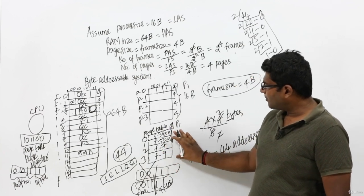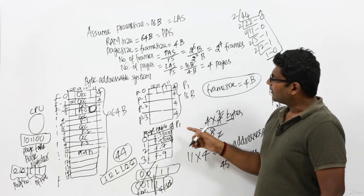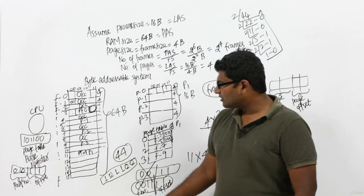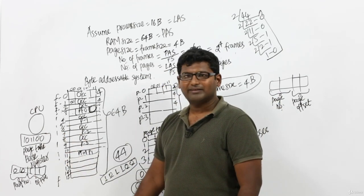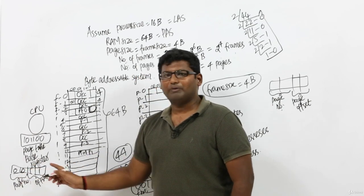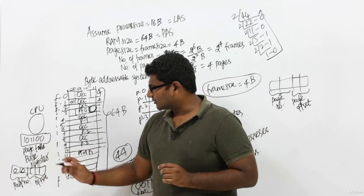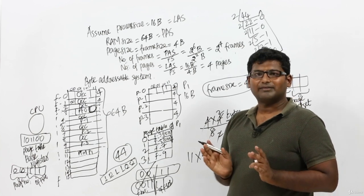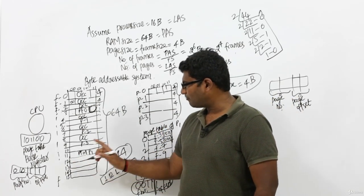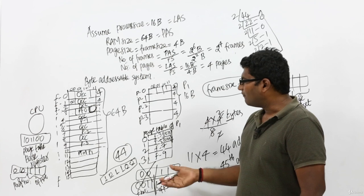What we did is create a page table. The number of entries in the page table equals the number of pages in the process — so for every process we have a page table. This page table is also placed inside the RAM, and then its base address is loaded in the page table base register. When the CPU decides to execute a byte of process P1, it generates the logical address, then finds the page table base address, loads it into the register, and uses it to reach the page table.